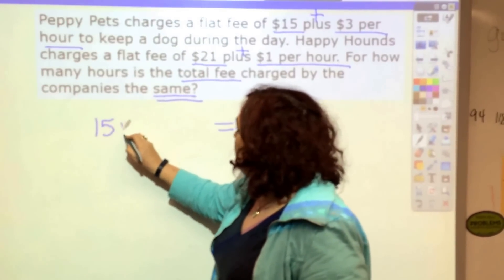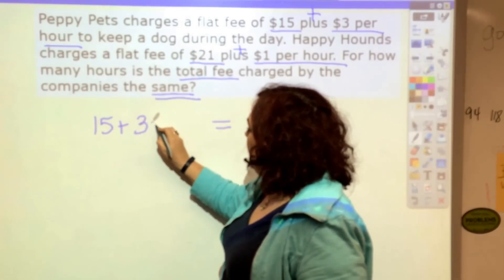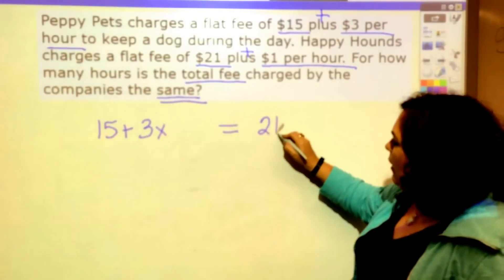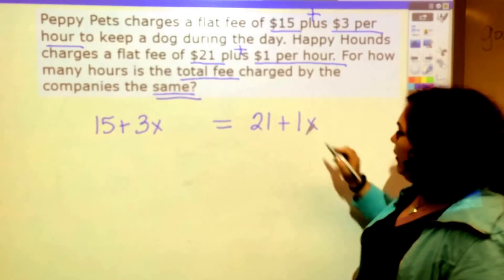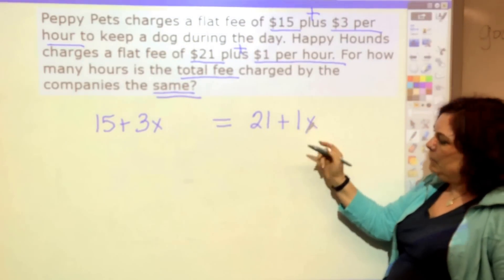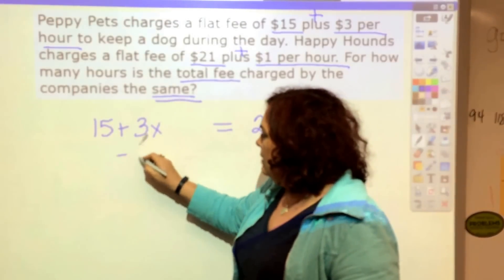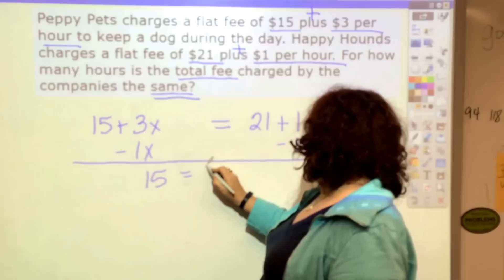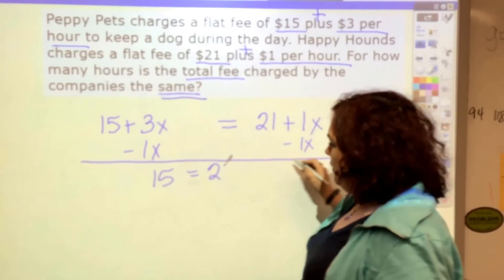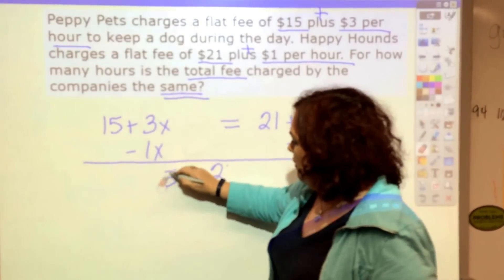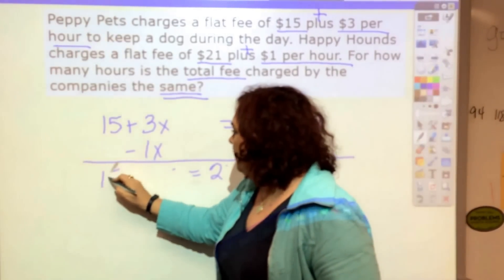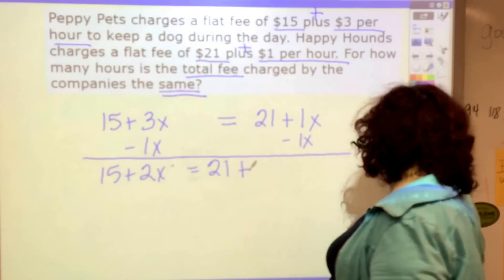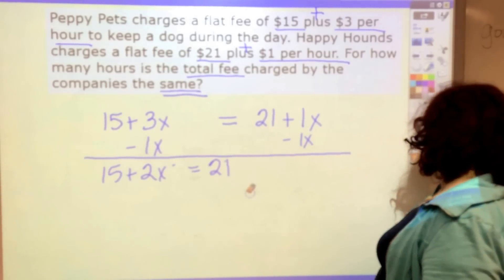I've got $15 plus $3 per hour — that's 3X — and that's going to be equal to $20 plus $1 per hour — that's 1X. I'm going to subtract 1X from both sides because I don't like negative variables. So I get 15 plus 2X is equal to 20, and now I have a two-step equation.